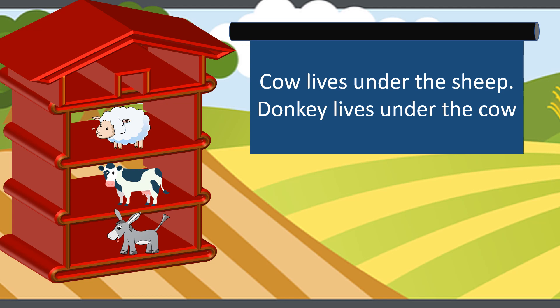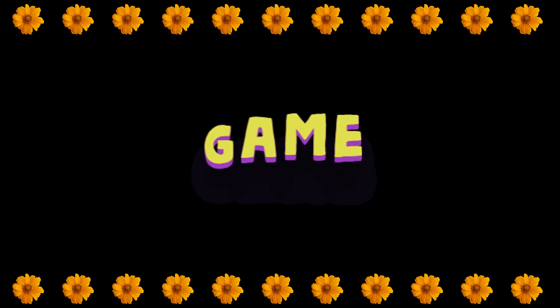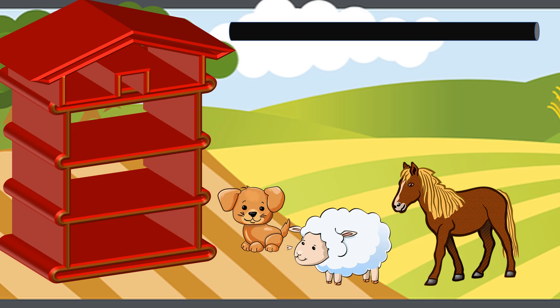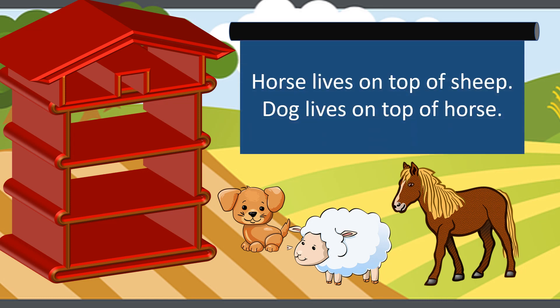I'm sure you're excited to play some more. Let's see our next clue: horse lives on top of sheep, dog lives on top of horse. Read it carefully again — both the sentences have 'on top of'. Horse lives on top of sheep, dog lives on top of horse. I'm sure you must have drawn a picture in your mind already. So let's place the animals.